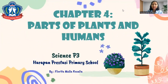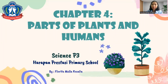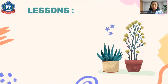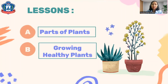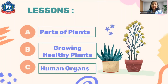Hello friends, how's your day? Welcome to science lesson for P3 students with me, Miss Rosa. Today we're going to have a new discussion in chapter 4 about parts of plants and humans. Are you ready? Let's start. In this chapter you're going to have three lessons: the first one, parts of plants; growing healthy plants; and the third one, human organs.